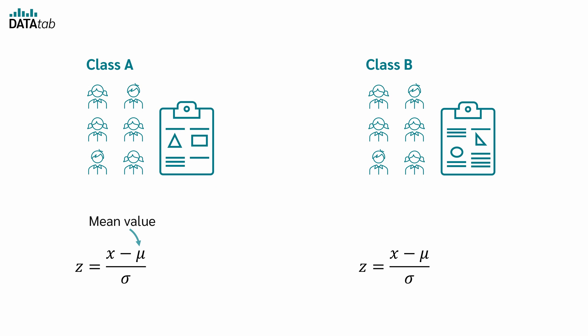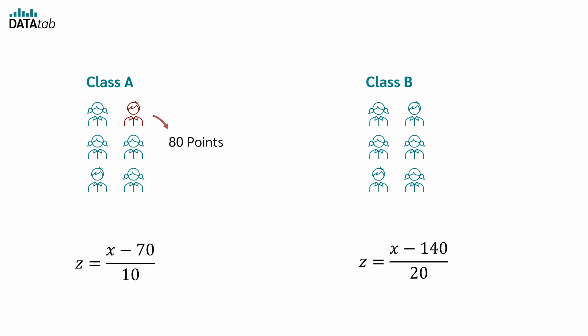The average score or mean value in class A was 70 points with a standard deviation of 10 points. The average score for the test in class B was 140 points with a standard deviation of 20 points. Now let's compare the performance of Max from class A, who achieved 80 points, with the performance of Emma from class B, who achieved 160 points.